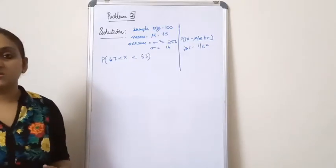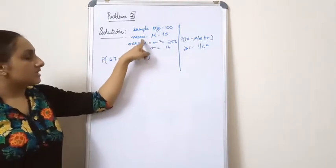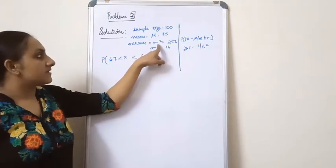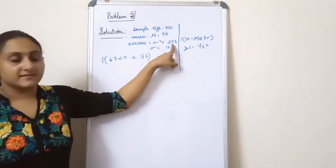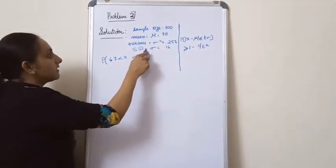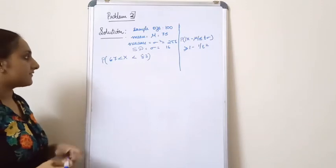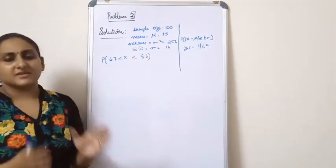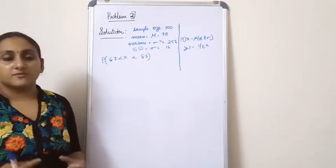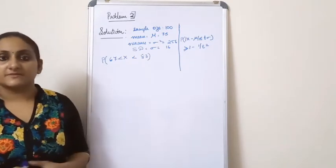In the next question, you are given the sample size as 100. The mean is 75, that is mu. The variance is given as sigma squared equal to 256. So the standard deviation sigma is equal to 16. And you are asked to find the probability of X lying between 67 and 83, by using the Chebyshev's inequality.